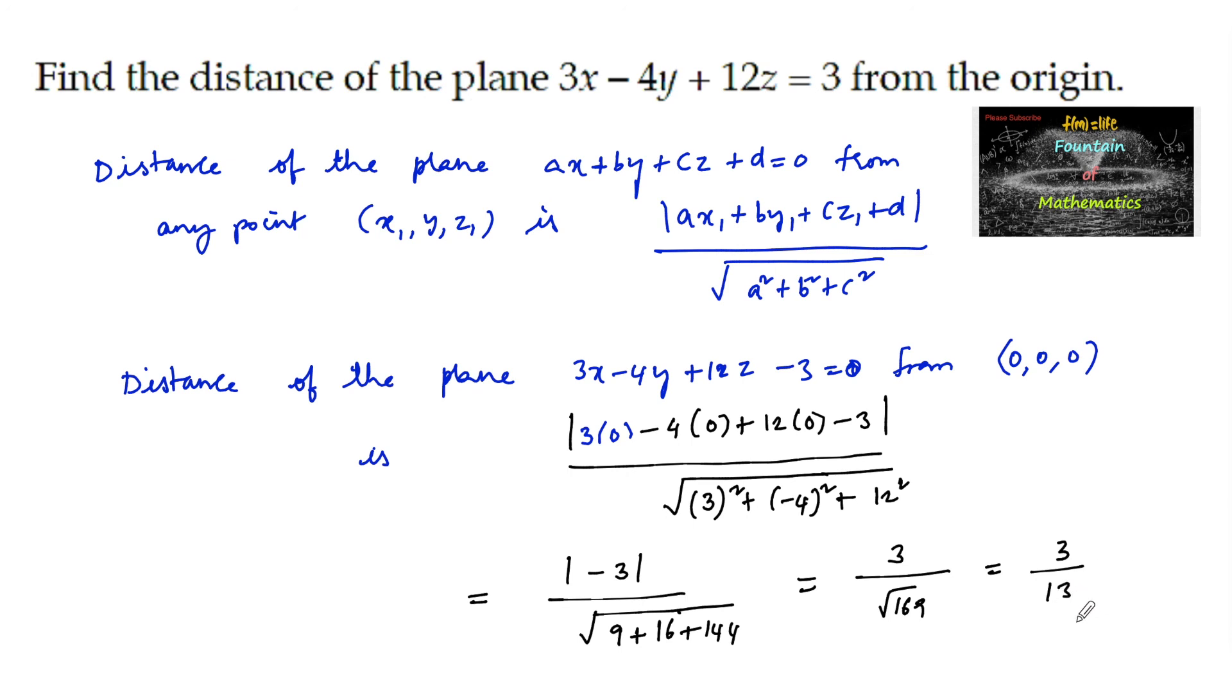So we will consider the positive square root, so 3 by 13 is the answer. The distance of the plane from origin is 3 by 13.